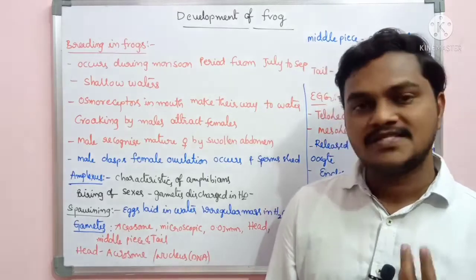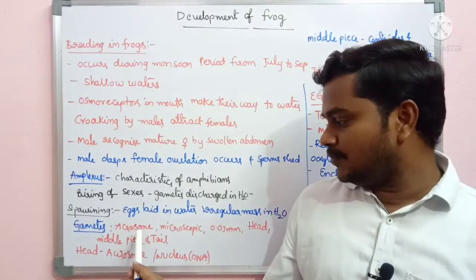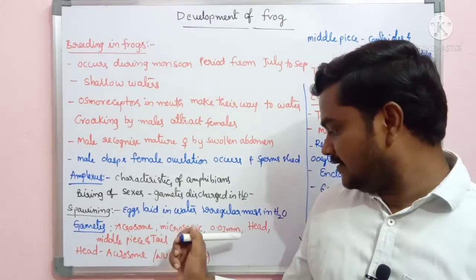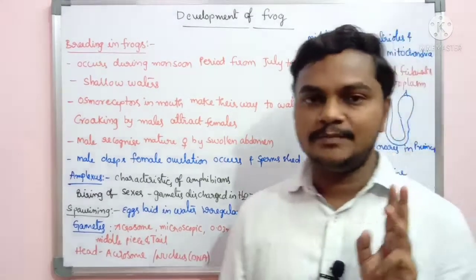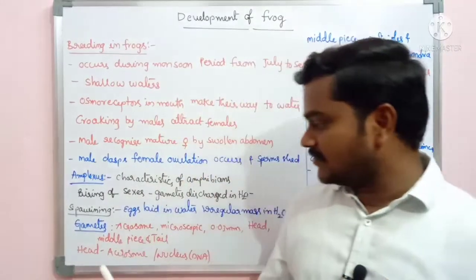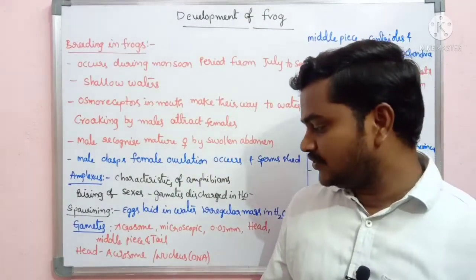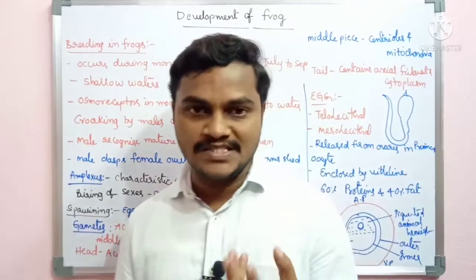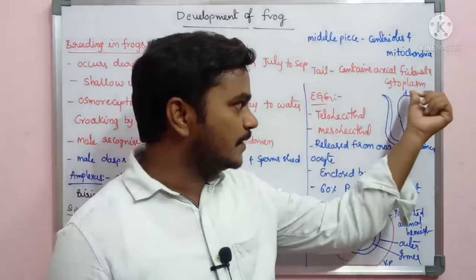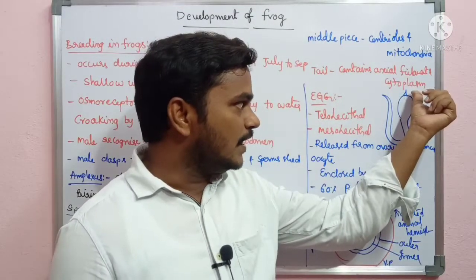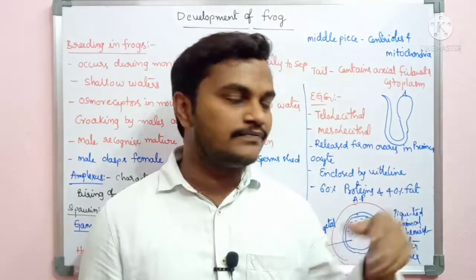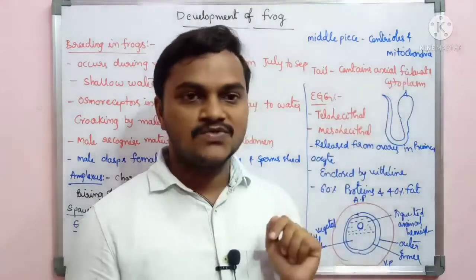Now, sperm. Sperm is a microscopic structure, approximately 0.3 mm. There are three parts: the head, middle piece, and tail. The head contains the acrosome. The acrosome is derived from the Golgi complex.